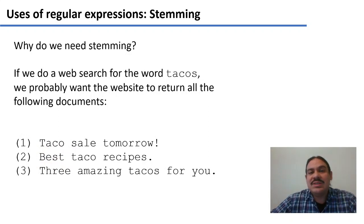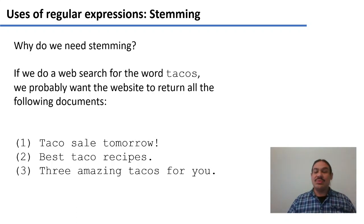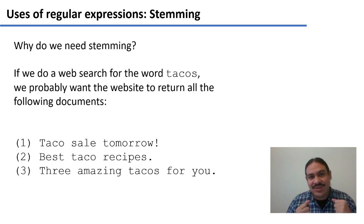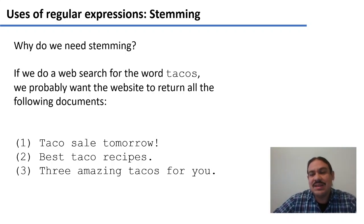So why do we need to reduce words to their stems? Words that have the same stem are related, and we probably want them classified together. If we have a search engine and we search for 'tacos,' we want it to return documents including 'tacos' — like 'three amazing tacos for you' — but also documents with 'taco,' the stem of tacos, such as 'taco sale tomorrow' or 'best taco recipes.' We need to transform our text into its stems so the computer can see these relationships.